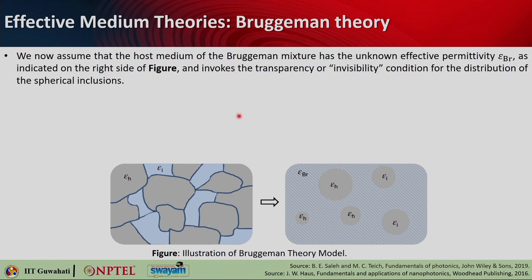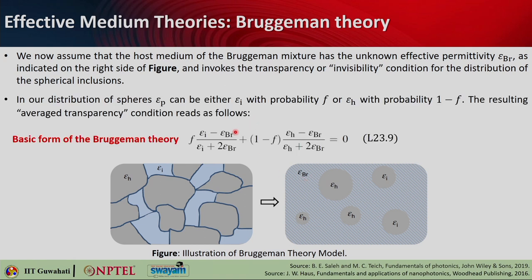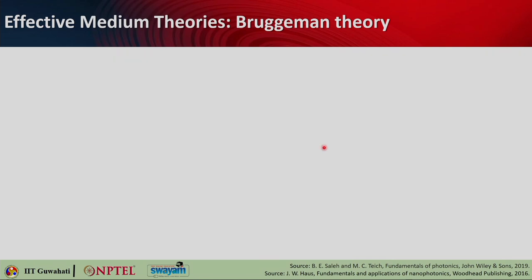We assume the host medium for this Bruggeman mixture has unknown effective permittivity epsilon_br. The basic form of Bruggeman's theory is: f*(epsilon_i - epsilon_br)/(epsilon_i + 2*epsilon_br) + (1-f)*(epsilon_h - epsilon_br)/(epsilon_h + 2*epsilon_br) = 0. The first term is the contribution from spheres of permittivity epsilon_i in an effective background medium of epsilon_br, plus the volume fraction of the other type with permittivity epsilon_h in background epsilon_br.